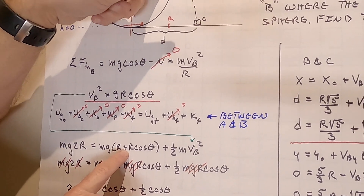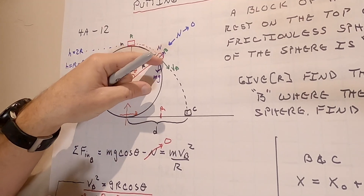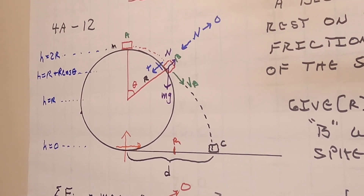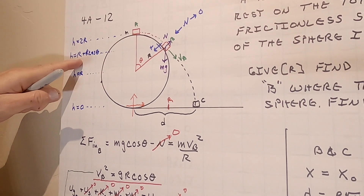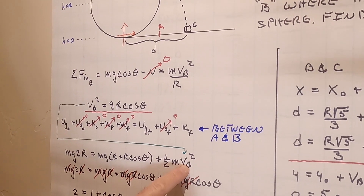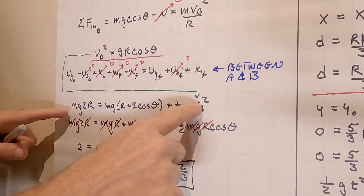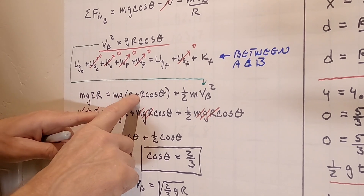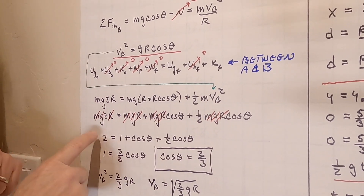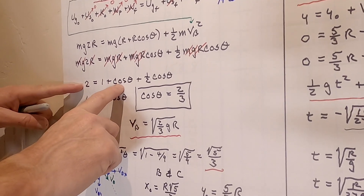Calling h = 0 at the base, h = r at the center and h = 2r at the top. The initial energy is mg·2r. At the departure point, the height is r plus r·cosθ — because the center is at height r, and that extra distance from the triangle is r·cosθ. So the potential energy there is mg(r + r·cosθ), plus one-half mv_B².